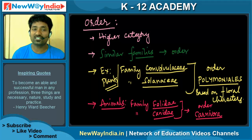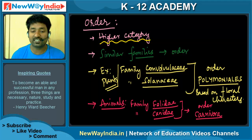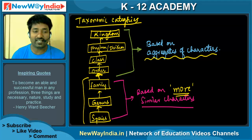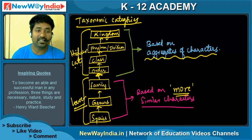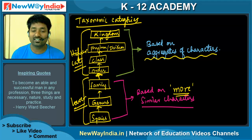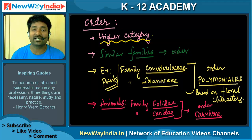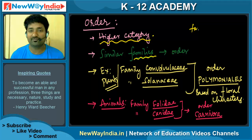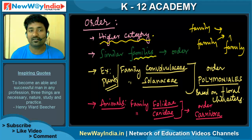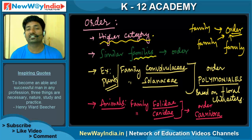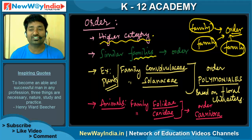The next category is order. Order comes under the higher categories. Species, genus, and family are considered lower categories, while order, class, phylum, and kingdom are higher categories. Order is the first of the higher categories. How is order formed? It is based on similar families — one family, another family, and yet another family come together under order. These families together constitute an order.